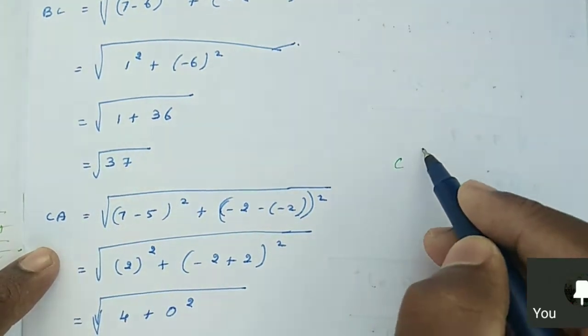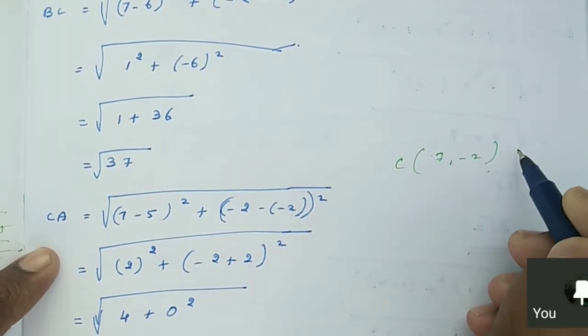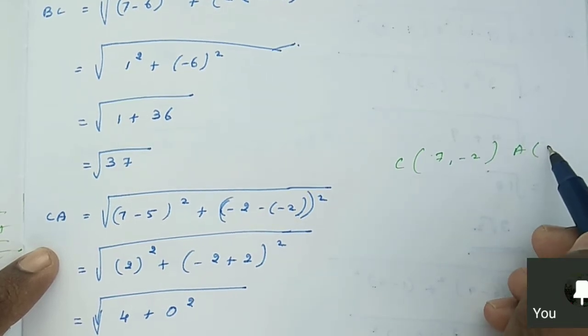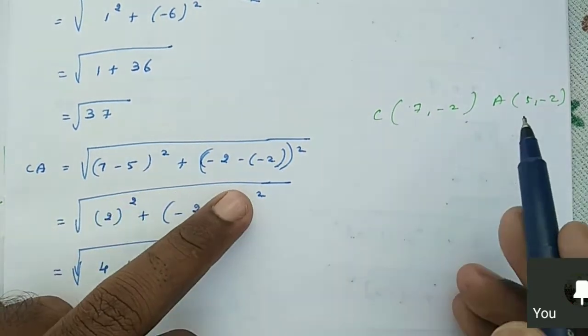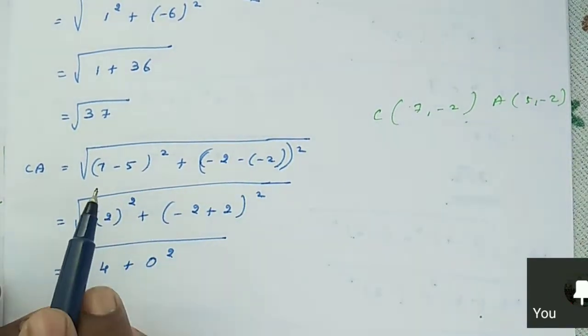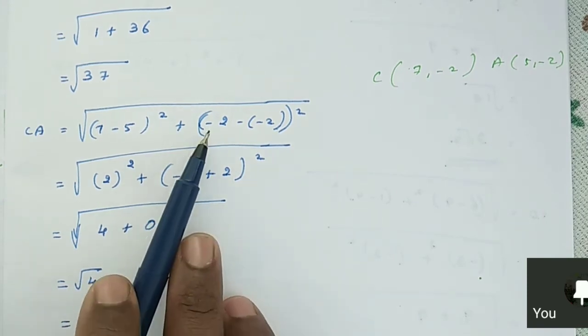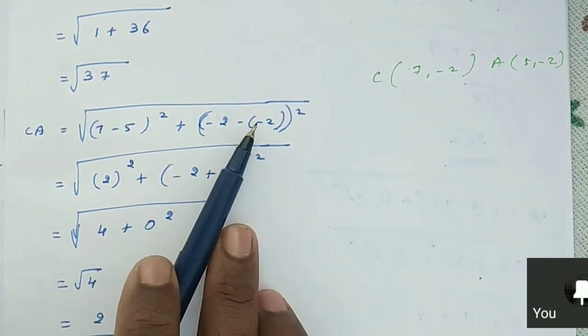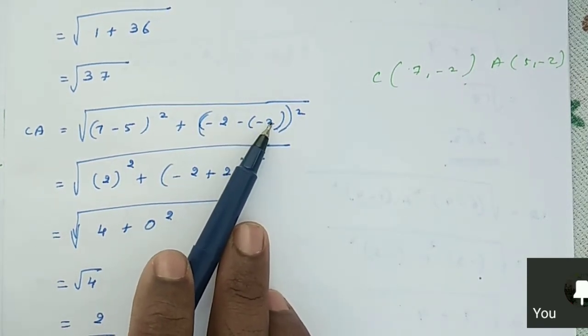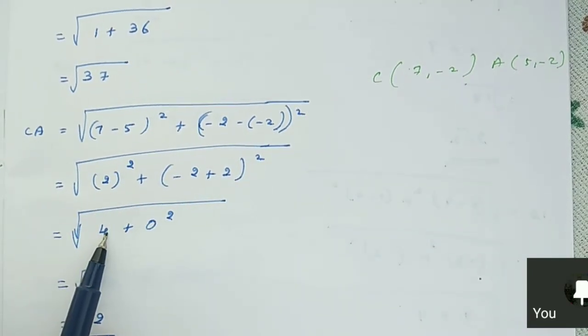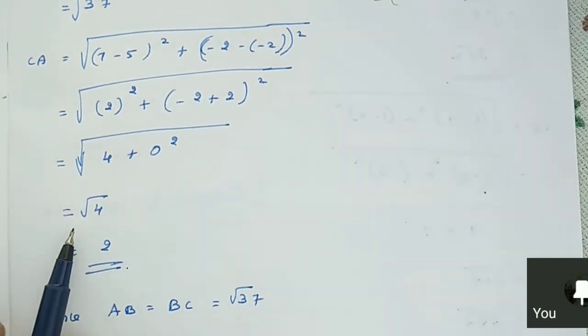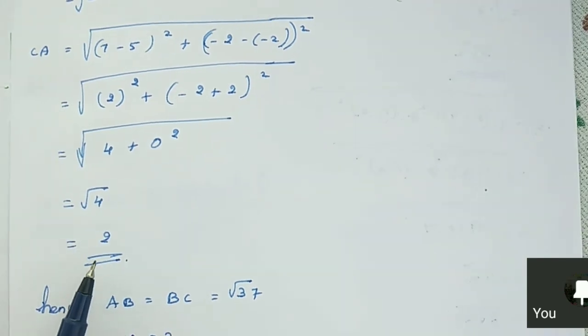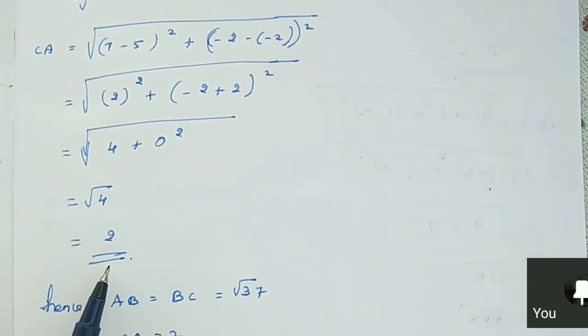Next we find CA. What is the C point? (7,-2). A point is (5,-2). So CA = √[(7-5)² + (-2-(-2))²] = √[(2)² + (0)²] = √4 = 2.